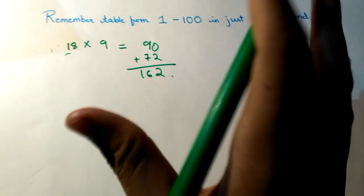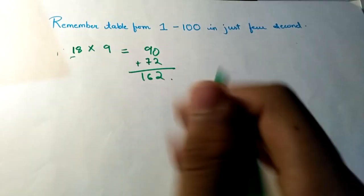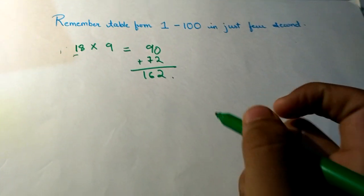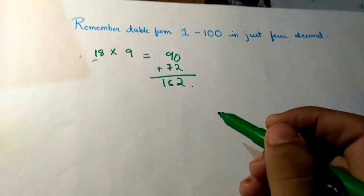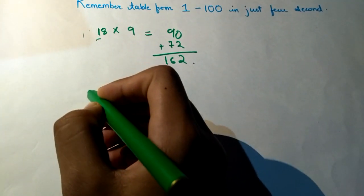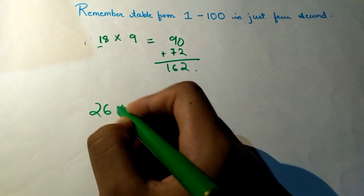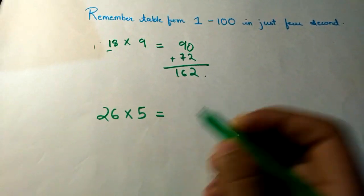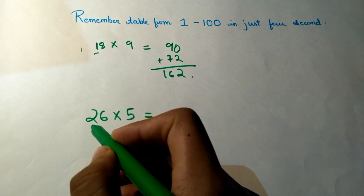This is the easy trick which you have to remember. We shall take another example to remember it perfectly. I can take here 26 × 5. The same trick I will follow.